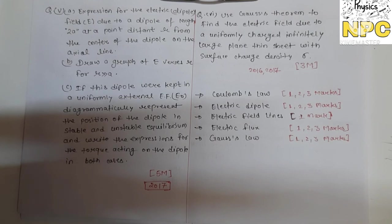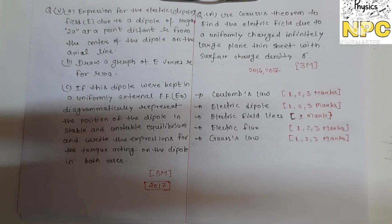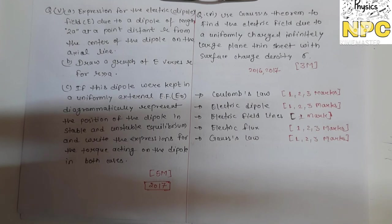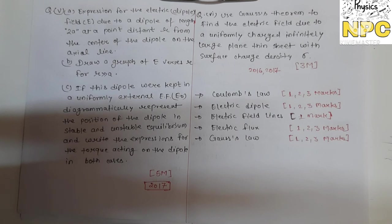And for Gauss's law — 1-mark questions can include statement, formula, or limitations. An important limitation: the surface used in Gauss's law must be closed, 3D, and symmetrical — that is a Gaussian surface. For 2 marks: give the statement and formula. These are the very important questions from chapter one, and your preparation must be 100% complete as any question can appear in the exam.